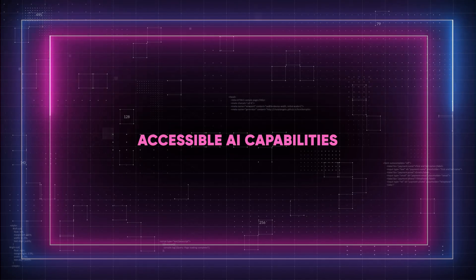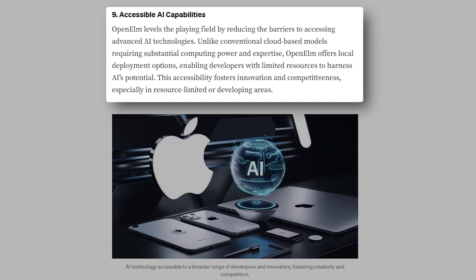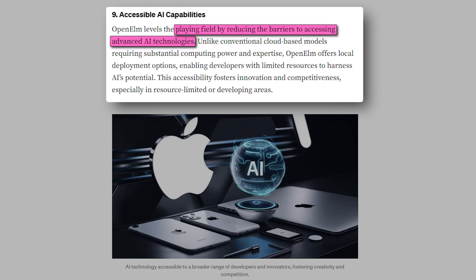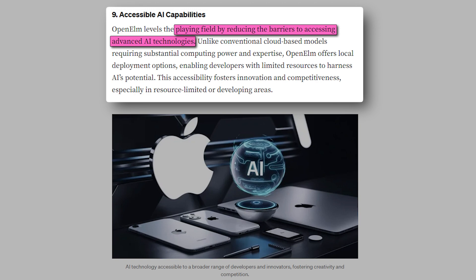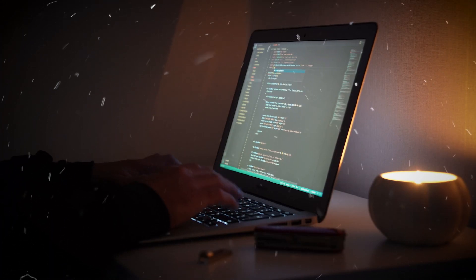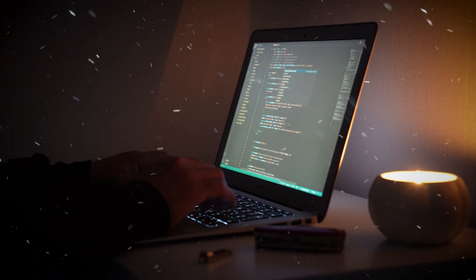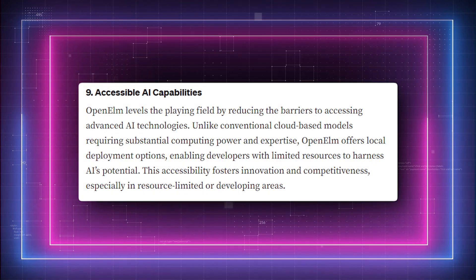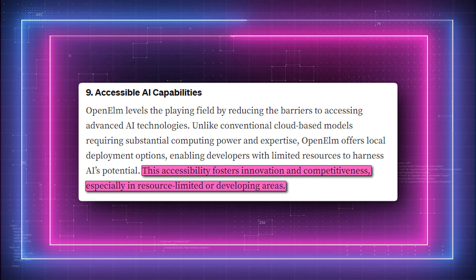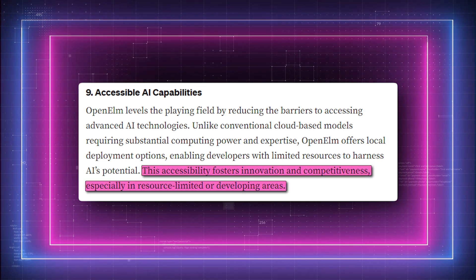Coming up at number nine, we have accessible AI capabilities. Open ELM's accessibility, in contrast to standard cloud-based AI models that need substantial computational resources and knowledge, equalizes AI by decreasing the barriers to entry for multiple individuals and organizations. Open ELM can be implemented locally, enabling developers with limited resources and expertise to make use of state-of-the-art AI technologies. Small businesses, startups, and even hobbyist developers can now use AI to generate new products, experiences, and services.